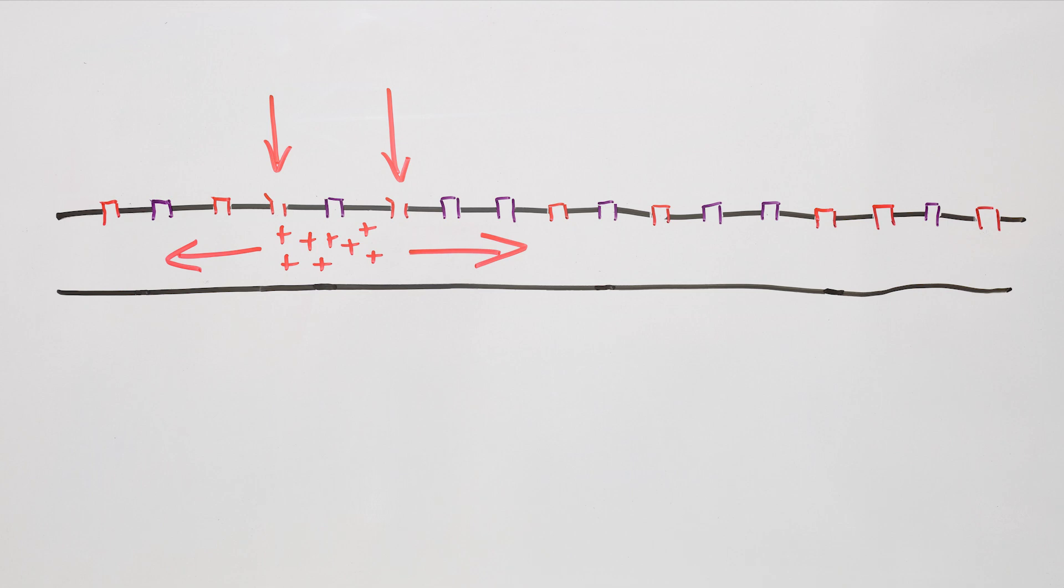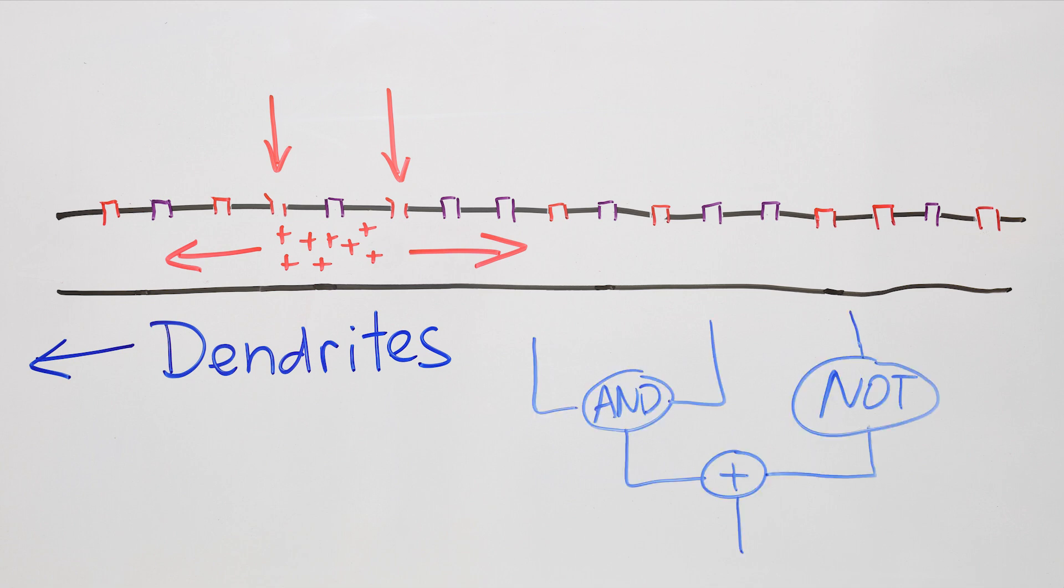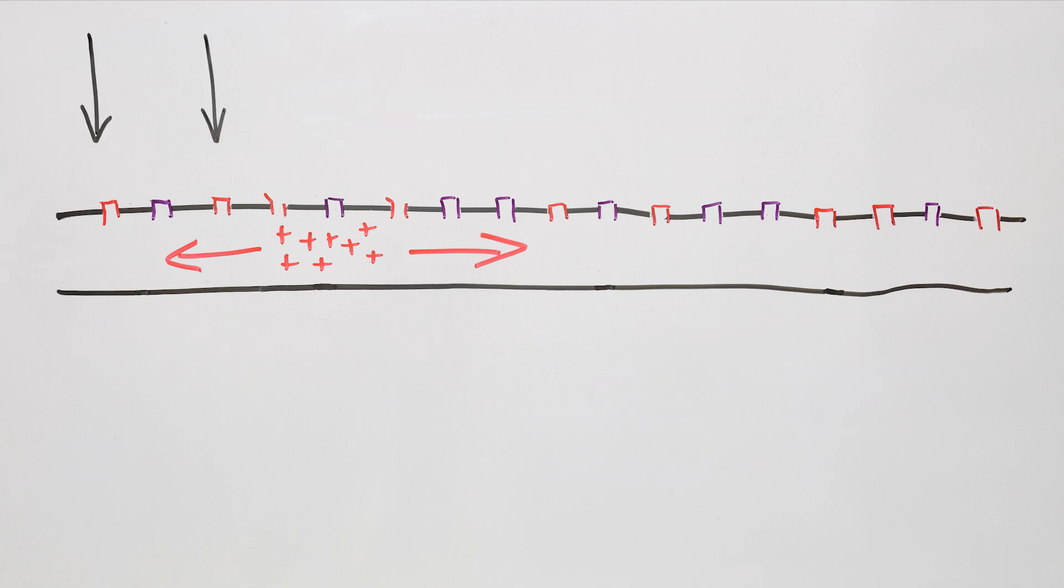The current from the spike does flow back through the main cell body and into the dendrites, where it can be an important input into the calculations that the dendrites perform. But the channels take some time to reset after each opening. So these channels stay closed. And so the spike keeps moving in one direction.